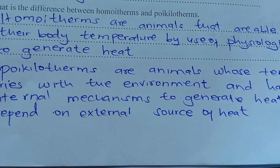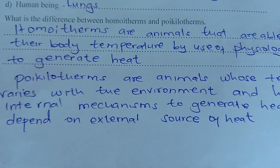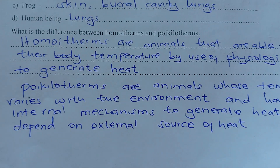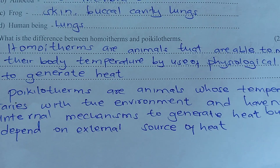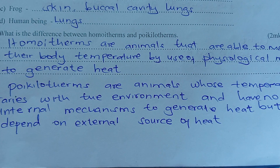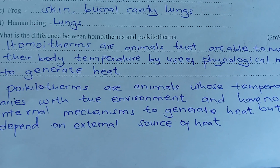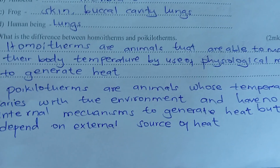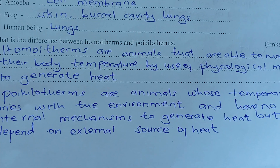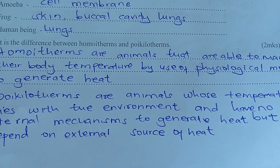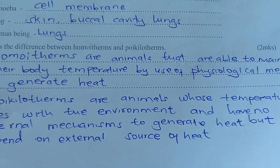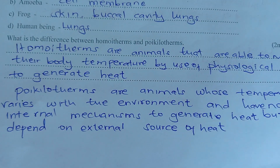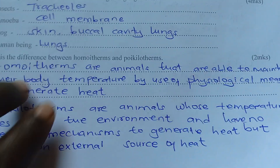Welcome back. What's the difference between homoiotherms and poikilotherms? Homoiotherms are animals that are able to maintain their body temperature by use of physiological processes to generate heat. Poikilotherms are animals whose temperature varies with the surrounding temperature, like the amphibians.